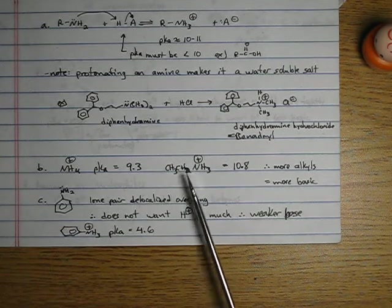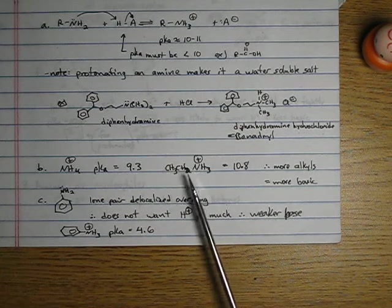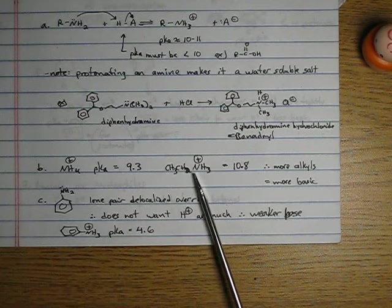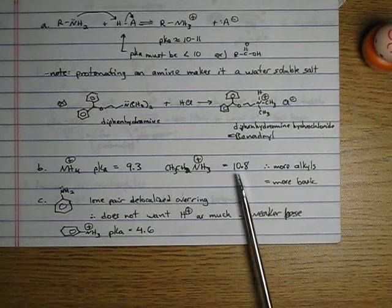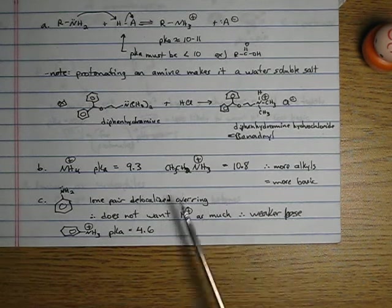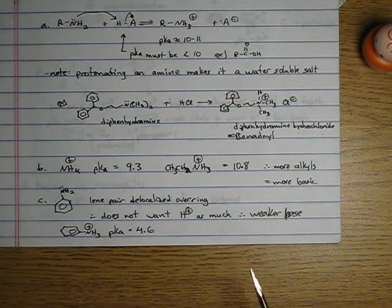Note, with a methyl group on that, or an ethyl group on that nitrogen, a protonated ethylamine, so this would be an ethyl ammonium cation, its pKa is 10.8. It is more basic.